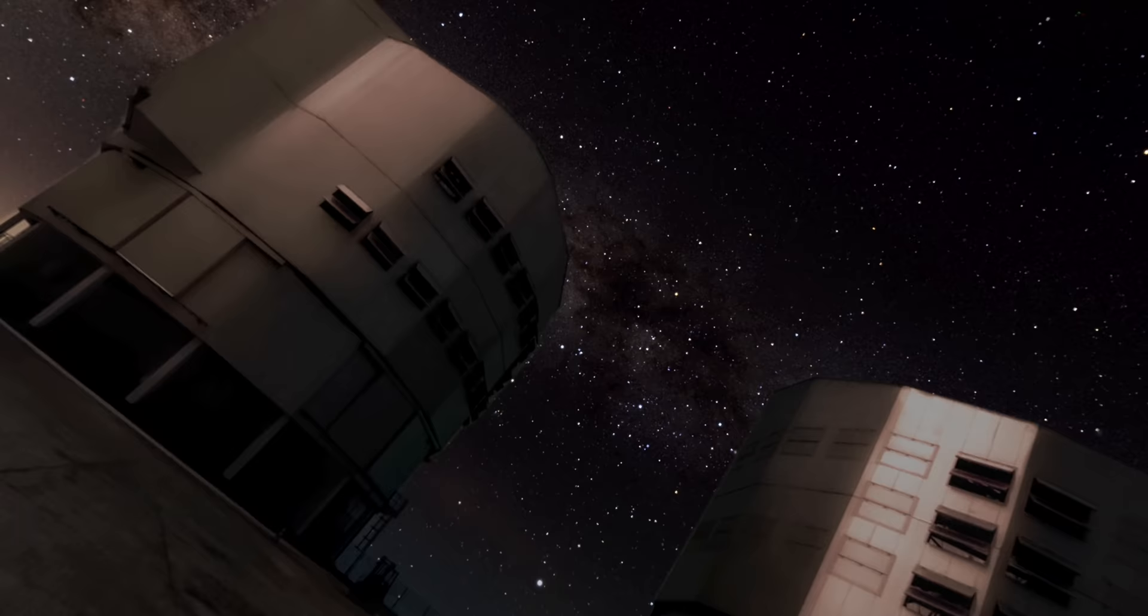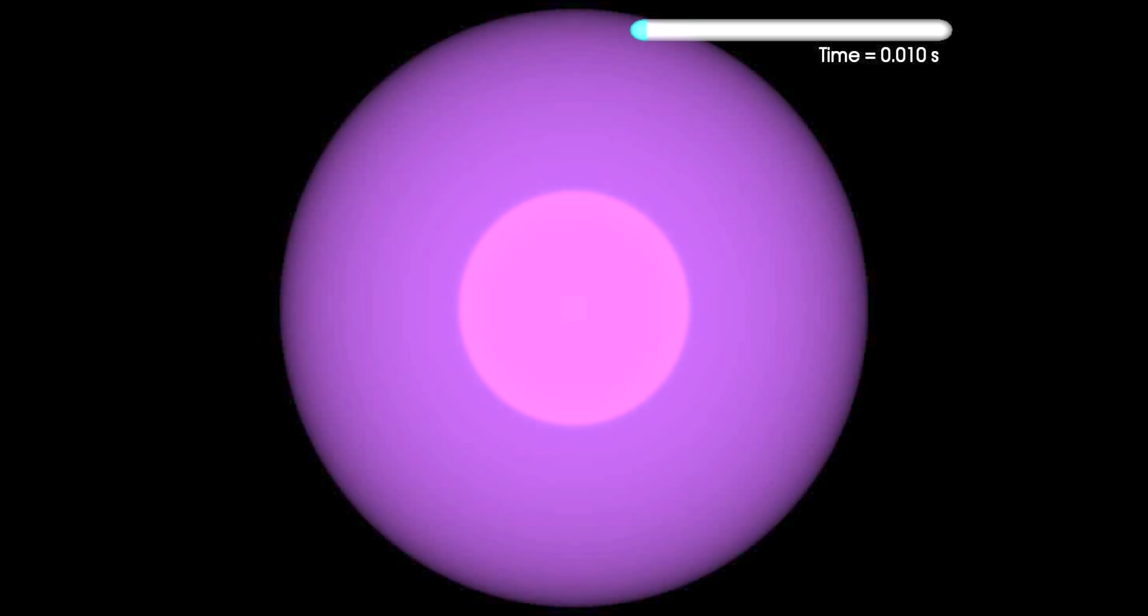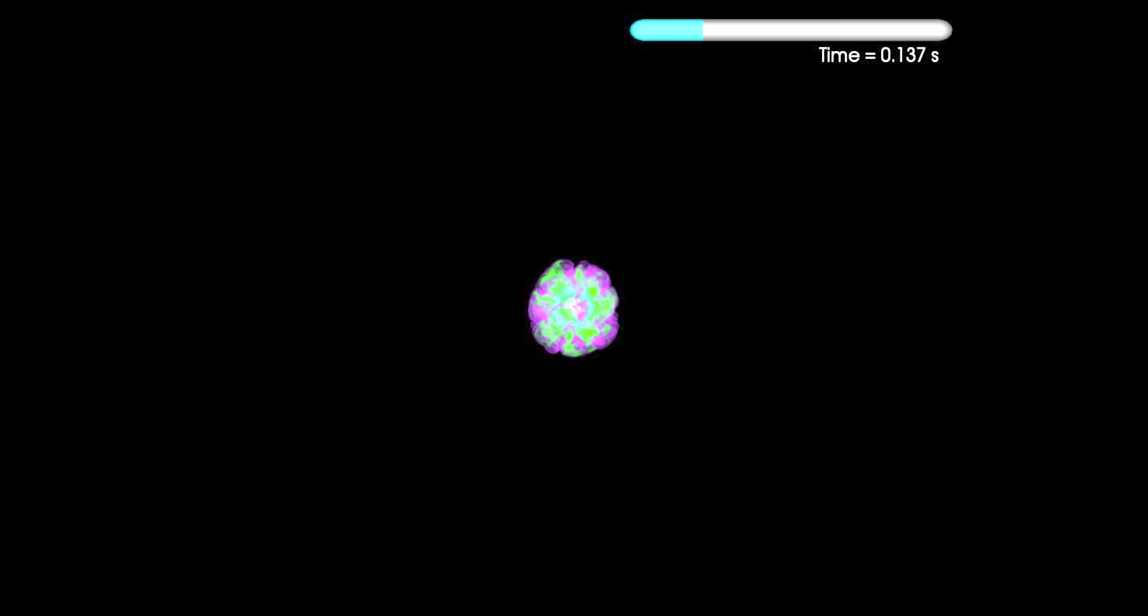They are incredibly rare and unpredictable. For a star larger than eight times the mass of our sun, a supernova marks the end of its life cycle. Running out of fuel in its core, the star collapses in on itself, and then in the ensuing crush of matter, it violently explodes.